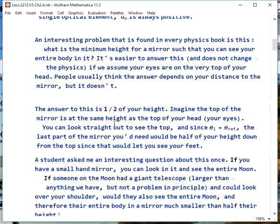There's one interesting problem that comes up in every physics book and that is what's the minimum height for a mirror that will allow you to see your entire body. It doesn't change anything, but it does make the image easier to understand if we imagine your eyes are at the very top of your head. Usually when people try and answer this question, they feel like it depends on how far away you are from the mirror that you can back up and see more of yourself in it, but that doesn't actually happen. The answer that you get when you do this is half of your height. If you imagine the top of the mirror is the same height as the top of your head, which is where we've put your eyes, you can look straight out to see the top and then, using the law of reflection, if you need to look at your feet, you'd look halfway down your height and the reflection would carry it down the rest of the way so that you can see your feet.